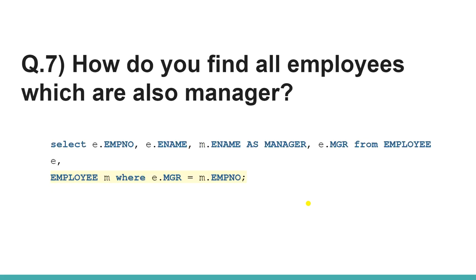The next question is a classic but still asked by some companies: employee and manager information is stored in a single table because a manager is also an employee. To select managers, you apply a self-join where the manager column of one row equals the employee number of another. We use alias E for employee reference and M for manager reference.